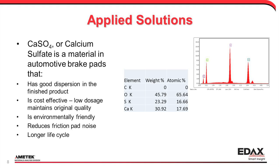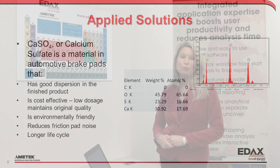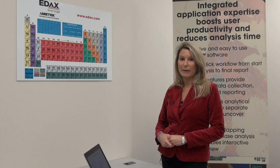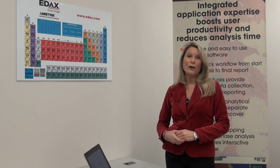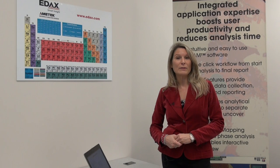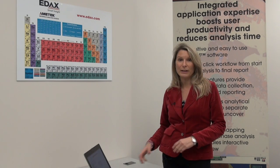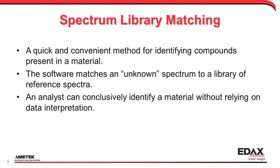If we investigate even further, we could understand that calcium sulfate, when found in a material such as the brake pad that we're analyzing, might be used for process control to ensure good dispersion or to make sure the material is cost effective — where, for example, calcium sulfate allows you to use a low dosage without reducing quality. There are also environmental benefits to using calcium sulfate in a brake pad material, and from a user perspective we all like cars with lower brake pad noise or long life cycles. Understanding the materials inside our samples is very important for so many different applications, and that's where spectrum library matching comes into play.